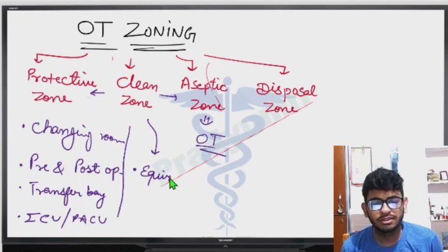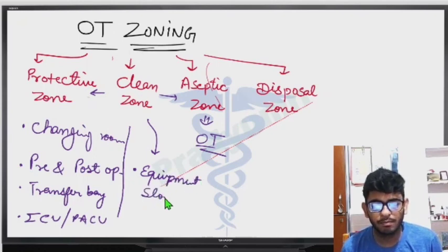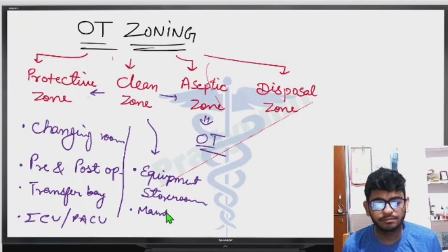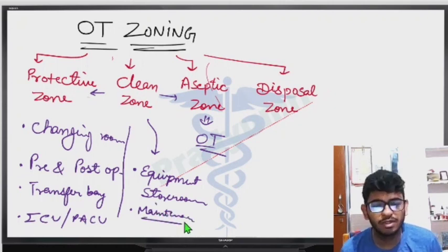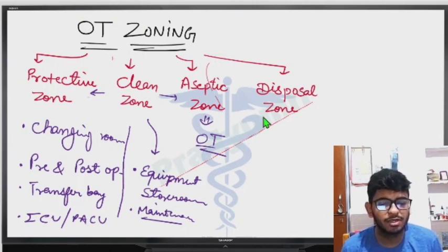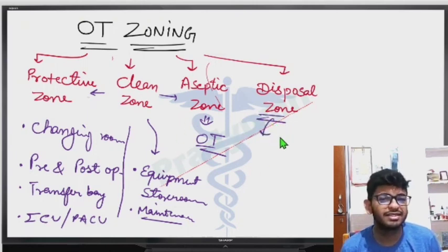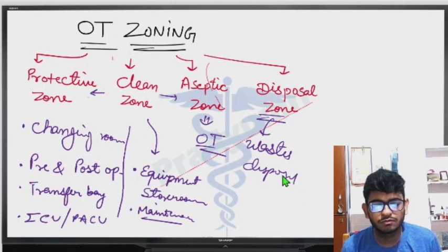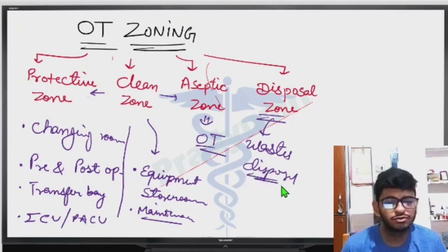The clean zone also includes the equipment store room and the maintenance workshop. The aseptic zone is the operation theater itself. Finally, the disposal zone is where all surgical waste is disposed of. This concludes the topics of OT zoning and blood loss estimation during surgery.